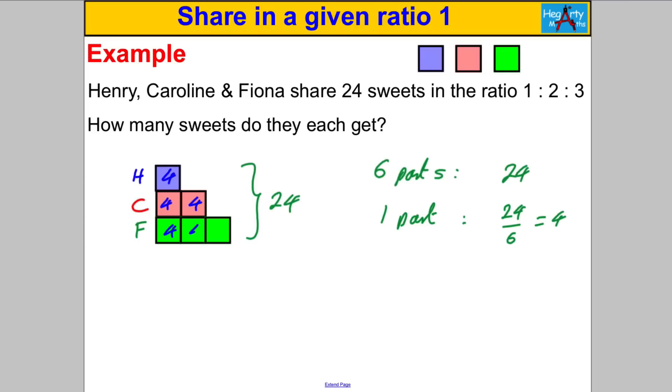So 4 must go here, 4 goes here and so on like that. Then it says how many sweets do they each get? Well Henry, therefore, you can see gets 1 part, so Henry gets 4. Caroline gets 2 boxes, which is 8, and finally Fiona gets 3 boxes, which is 12 sweets. So there you go, the question answered nice and simply with a picture.